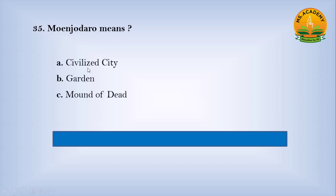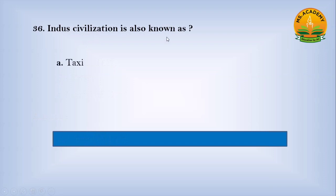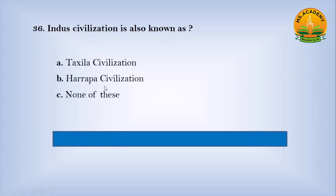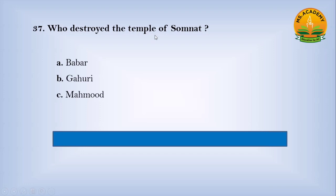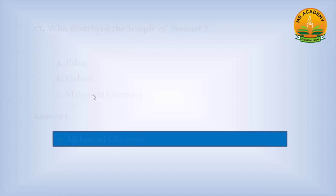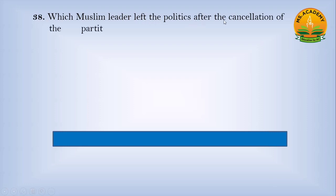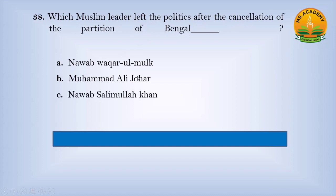Mohenjo-Daro means: Option A, Civilized City; Option B, Garden; Option C, Mound of the Dead. Answer: C — Mound of the Dead. The Indus Civilization is also known as: Option A, Taxila Civilization; Option B, Harappa Civilization; Option C, none of these. Answer: B — Harappa Civilization. Who destroyed the temple of Somnath? Option A, Babar; Option B, Ghori; Option C, Mehmood Ghazni. Answer: C — Mehmood Ghazni. Which Muslim leader left politics after the cancellation of the Partition of Bengal? Option A, Nawab Waqarul Mulk; Option B, Muhammad Ali Johar; Option C, Nawab Saleemullah Khan. Answer: C — Nawab Saleemullah Khan.